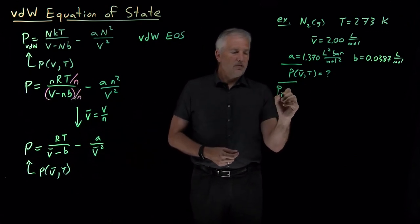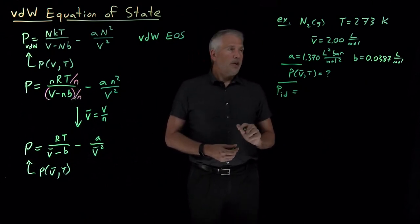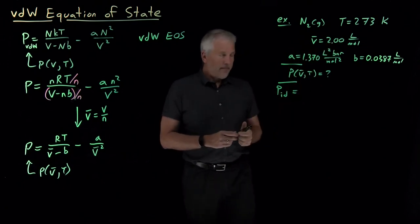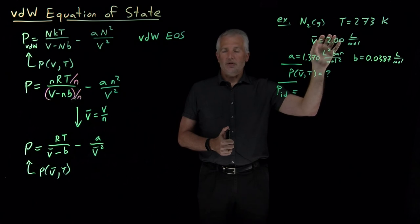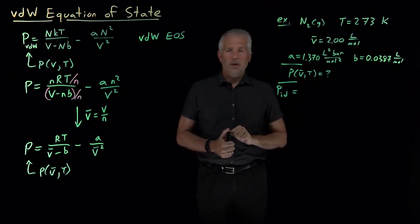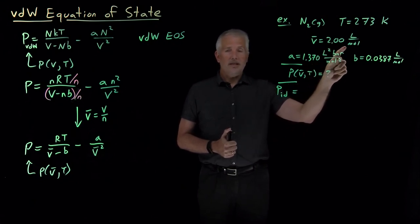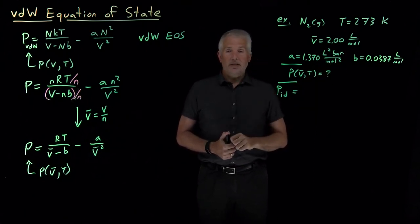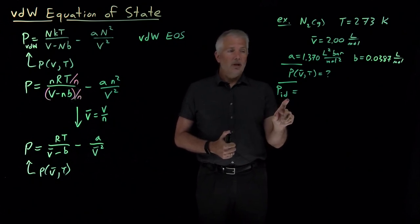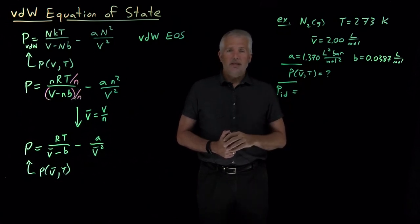Now that's enough information to calculate the pressure two ways. First, let's calculate the pressure as if it were an ideal gas, just to get our bearings. We know at standard temperature and pressure — 273 Kelvin and one atmosphere — the molar volume would be 22.4 liters per mole. This volume of two liters per mole is roughly 10 times smaller, so we should expect both the Van der Waals and ideal gas pressures to be relatively high — about 10 times higher than standard pressure.